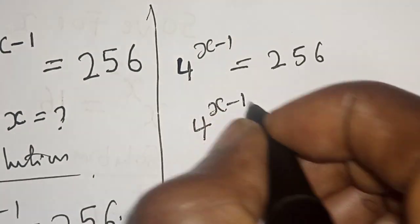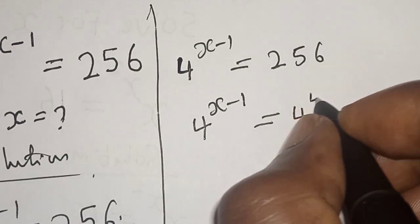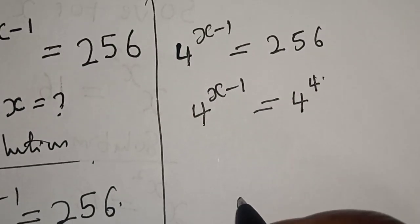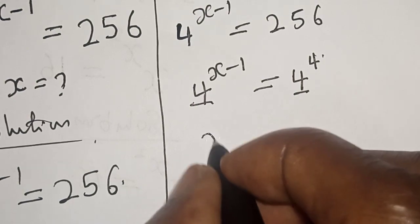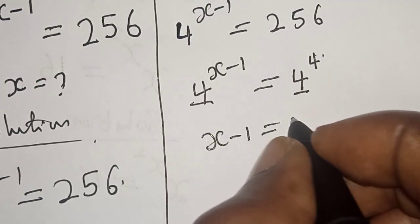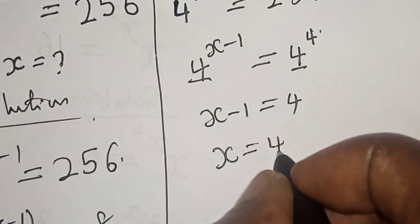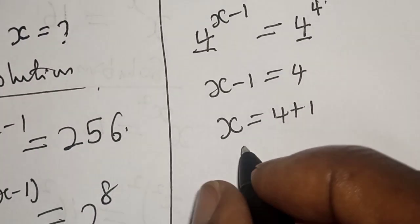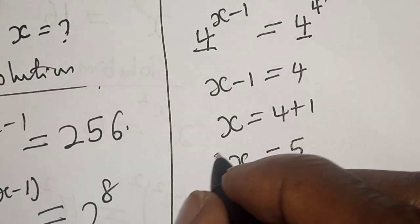4 to the power x minus 1 is equal to 256, which is 4 to the power 4. They have the same base, so x minus 1 is equal to 4. x is equal to 4 plus 1, x is equal to 5. That is our final answer.